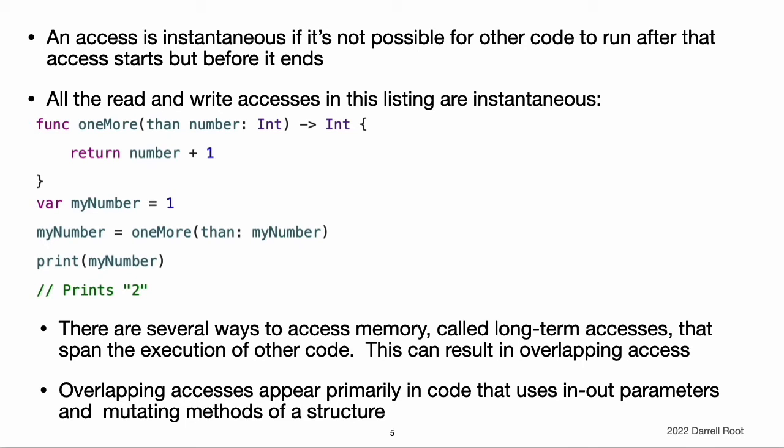For example, all the read and write accesses in this code listing are instantaneous. However, there are several ways to access memory called long-term accesses that span the execution of other code. The difference between instantaneous access and long-term access is that it is possible for other code to run after a long-term access starts but before it ends, which is called overlap. A long-term access can overlap with other long-term accesses and instantaneous accesses. Overlapping accesses appear primarily in code that uses in-out parameters in functions and methods or mutating methods of a structure.